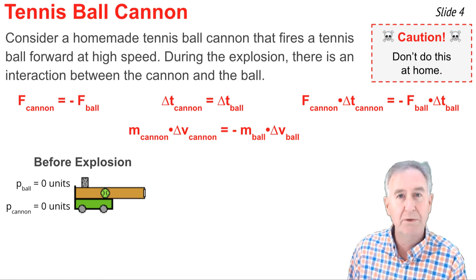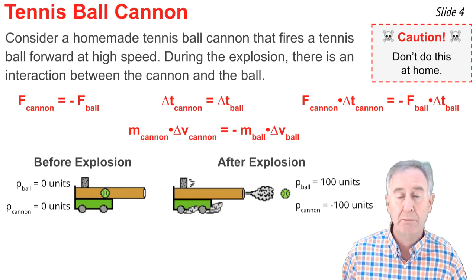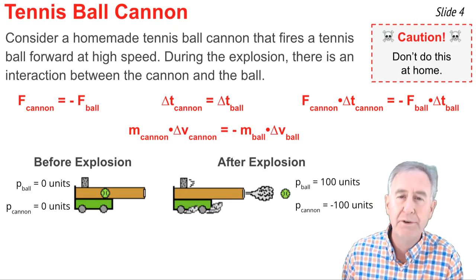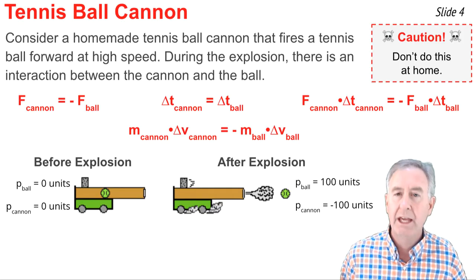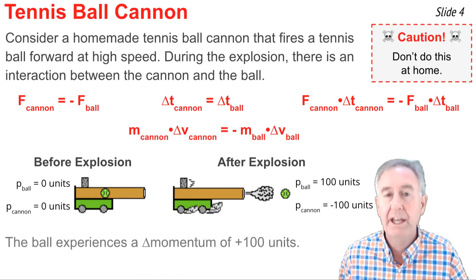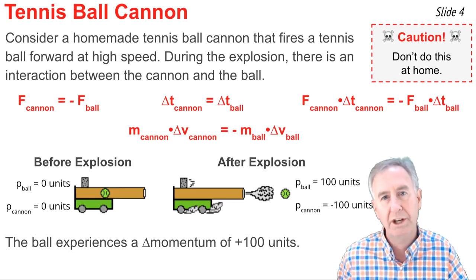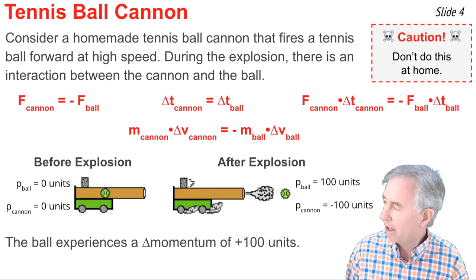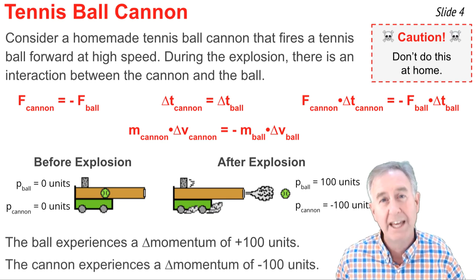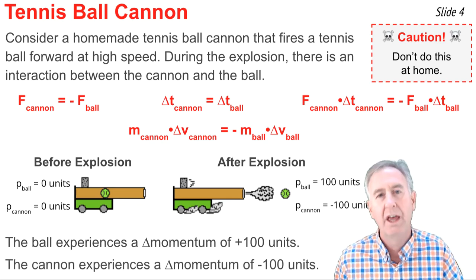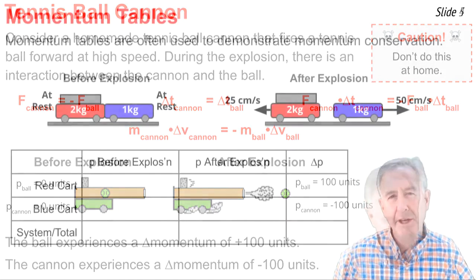Before the explosion, both objects are at rest with zero momentum. After the explosion, the ball goes flying forward with, say, 100 units of momentum, and the cannon recoils backwards with negative 100 units of momentum. The ball changes its momentum from zero to positive 100 — a change of positive 100 units. The cannon changes from zero to negative 100 units — a change of negative 100 units. The momentum change of the cannon is equal and opposite to the momentum change of the ball.